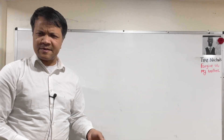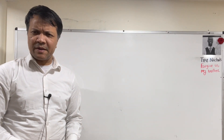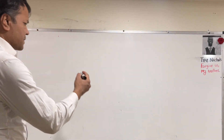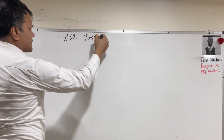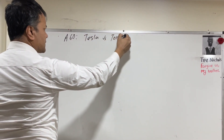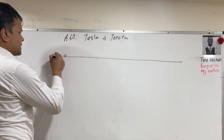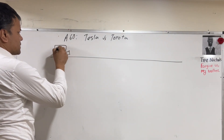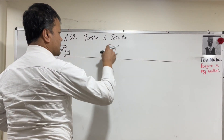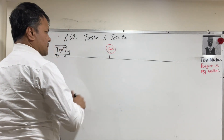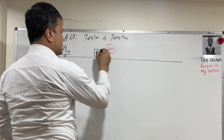I never made a tutorial for assignments 60 and 61, and thanks to Ivan, he reminded me today. So let's start with assignment 60: Tesla versus Toyota. I'm going to put you on a road — there is a Toyota and there is a Tesla waiting at a red light.